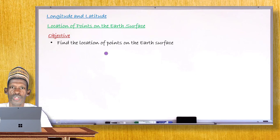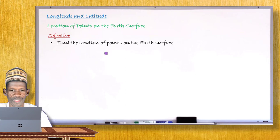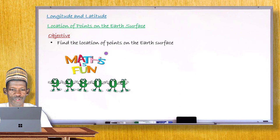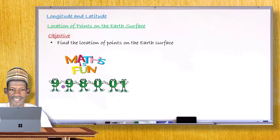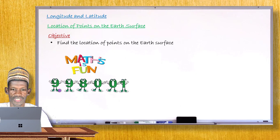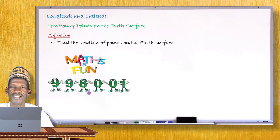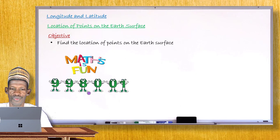As usual, in the variety segment of the lesson — 'Maths is Fun' — today I will give you another interesting number. This number, 998,001, is a very special number. In fact, it's a miraculous number. I will explain the miracle about this number after completing my lesson today, so don't go away.